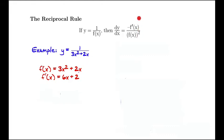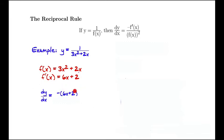So now we take f prime of x and f of x and just insert them into this formula. So dy/dx, the derivative of our original function 1 over 3x squared plus 2x, is equal to minus — that's this minus sign right there — (6x plus 2), that's f prime of x. It's important to put parentheses around the 6x plus 2 because the minus applies to the entire derivative. So it's minus (6x plus 2) divided by the original function squared, with parentheses around the original function. That's dy/dx, the derivative of this original function based on the reciprocal rule.